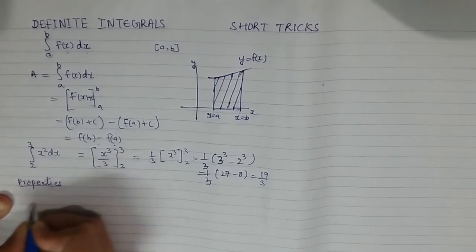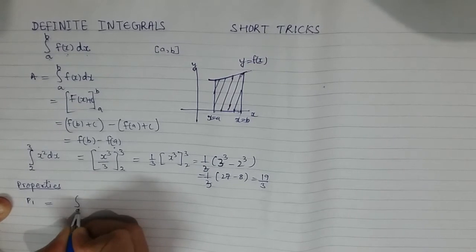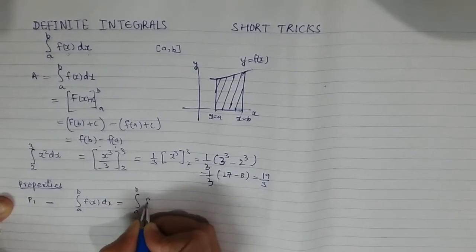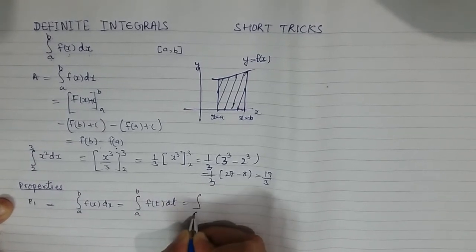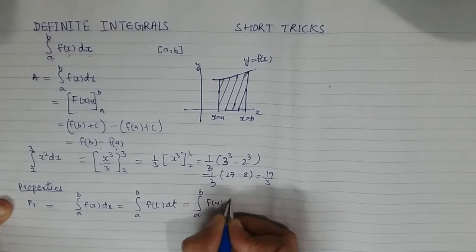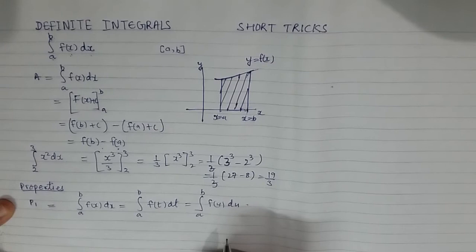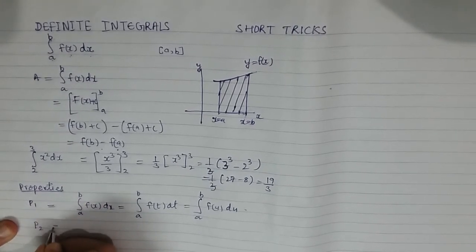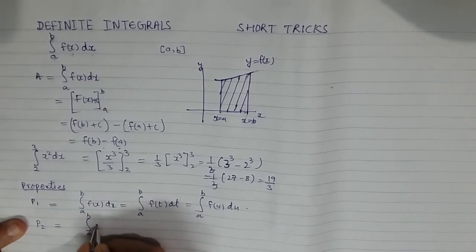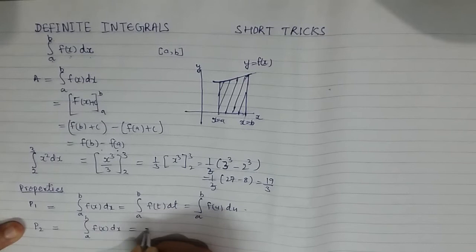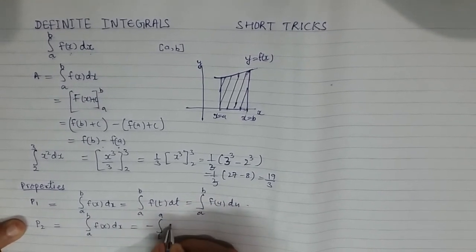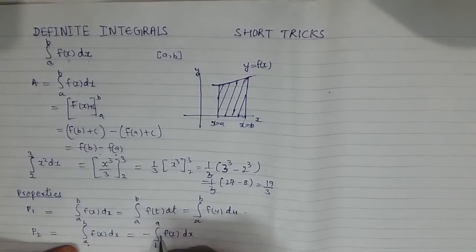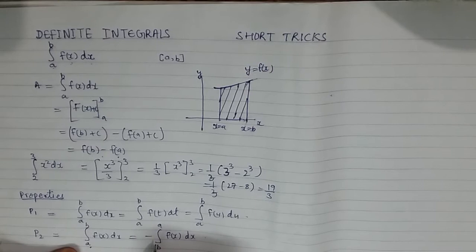Property P1 states that the integral of f(x) from a to b is the same as the integral of f(t) dt from a to b, which is also the same as the integral of f(u) du from a to b. This means if the limits are the same you get the same result regardless of what variable is used. Property P2 says that if we interchange the limits — writing b to a instead of a to b — our integral becomes the negative of the original integral.